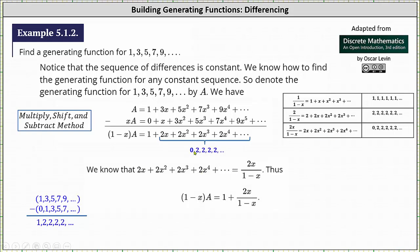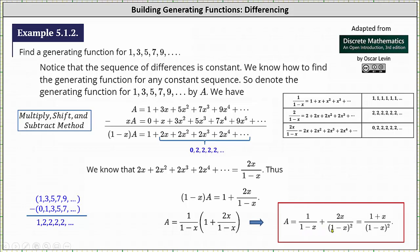So now that we know this, we can perform a substitution for everything on the right side of the equation except the one. This gives us the equation: the quantity one minus x times A equals one plus 2x divided by the quantity one minus x. To find the generating function for the given sequence, we solve for A by multiplying both sides by one divided by the quantity one minus x. On the right, we distribute, which gives us one divided by the quantity one minus x, plus 2x divided by the square of the quantity one minus x. Obtaining a common denominator and adding the two fractions — shown here in blue — gives us a generating function of the quantity one plus x divided by the square of the quantity one minus x.